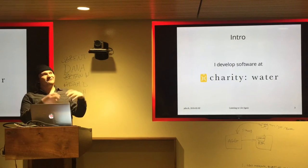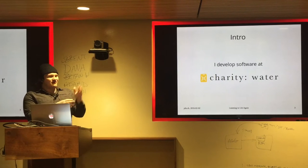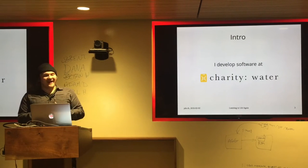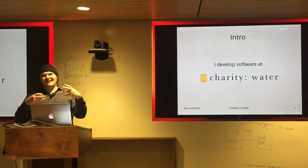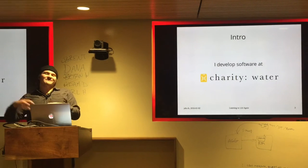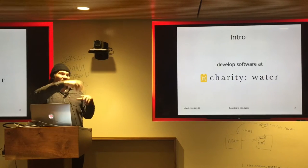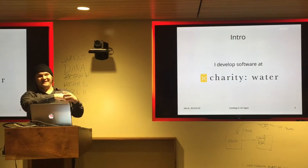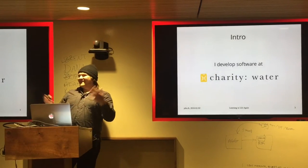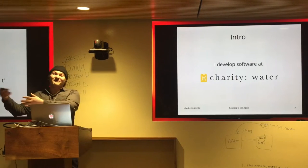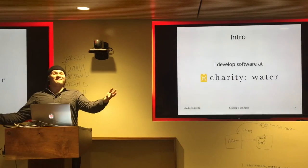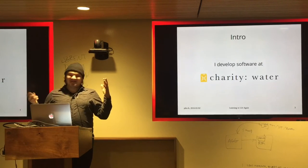We have two teams, similar to how we have two goals. One team works on fundraising — raising money — and that's all public-facing. I work on the internal team, so none of my work is public. I build internal tools and tools for our partners — for example, a project to help our growth team manage donors, and a project to support our partners with our well monitoring system. Charity Water is in New York City; I work remotely from my little room in Portland.